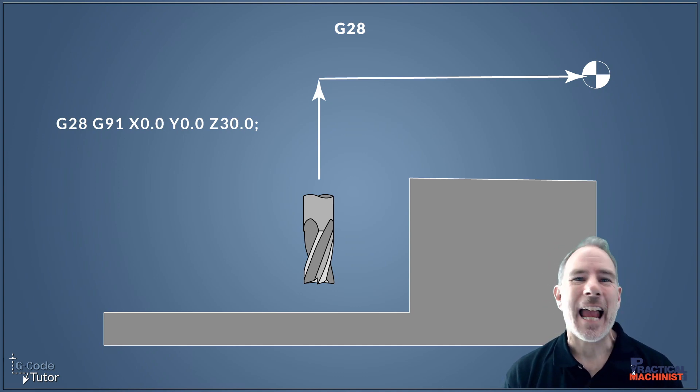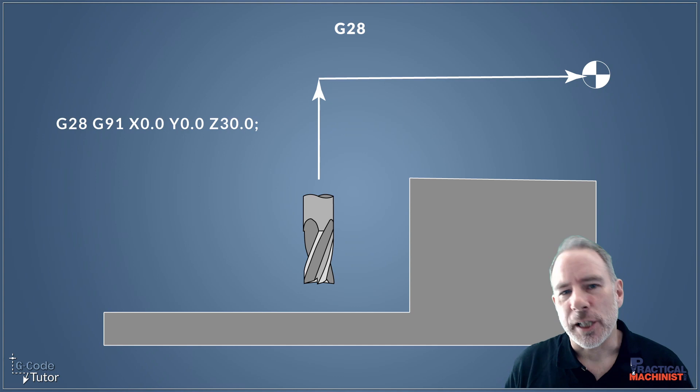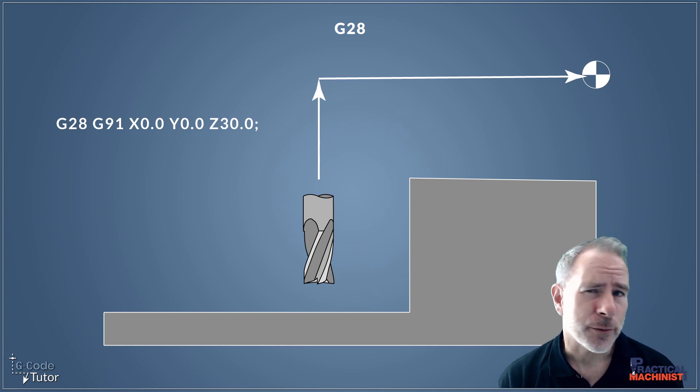But when writing any programs, of course, we should first run it in single block with our feed rate override right down, making sure we know where that cutter is going to be before we push that cycle start button. You can always check your programs by being very careful at the machine and running through line by line with a slow feed rate and a slow rapid speed, so you can predict where that cutter is going to be by reading the next position on the screen.